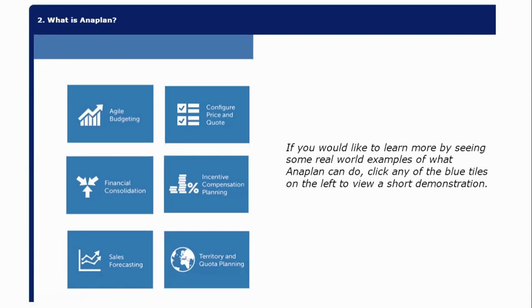Agile budgeting means you have a total budget — you are running an organization, you know what your revenue is, you know what the expenses are to get that revenue. There is your revenue, there are expenses, and then you want to find out your profit and loss for the current year. With that data, you want to forecast it for the next year. That's agile budgeting, and with this you see a lot of data changes happening.